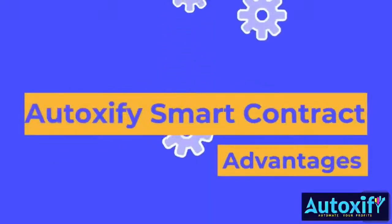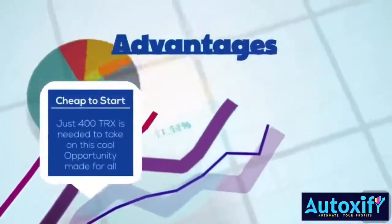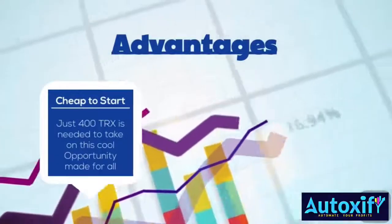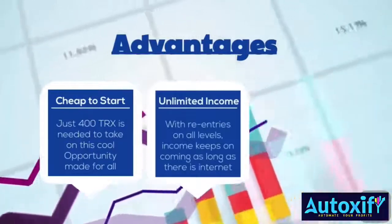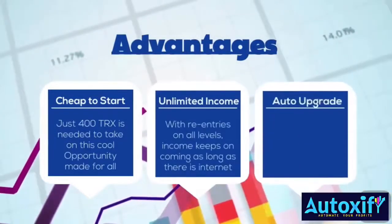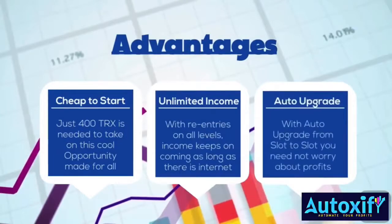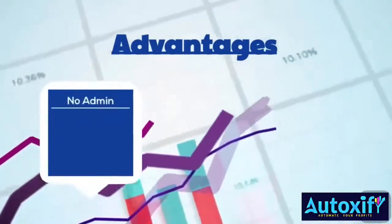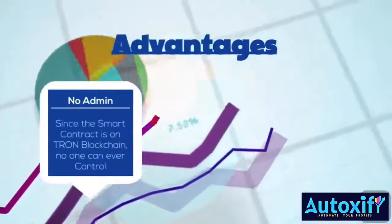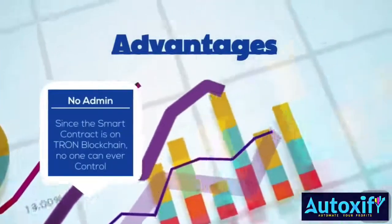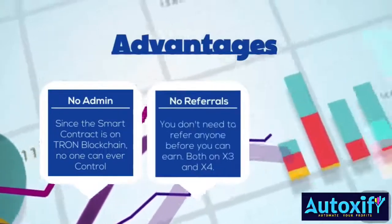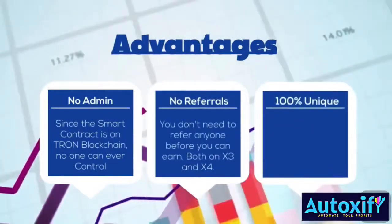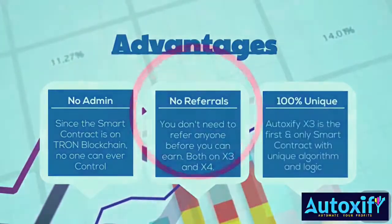Autoxify smart contract advantages: Cheap to start — just 400 TRX is needed to take on this opportunity. Unlimited income — with re-entries on all levels, income keeps coming as long as there is internet. Auto upgrades — with automatic upgrade from slot to slot, you need not worry about profits. No admin — since the smart contract is on the Tron blockchain, no one can ever control it. No direct referral — you do not need to refer anyone before you can earn, both on Autoxify X3 and X4. 100% unique — Autoxify X3 is the first and only smart contract with this unique algorithm and logic.